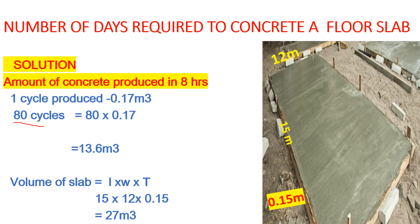Let's now find the volume of the slab. The length is 15 meters, the width is 12 meters, and the thickness is 0.15 meters. Multiplying those together gives us 27 cubic meters. This is the total volume of concrete required for this slab.